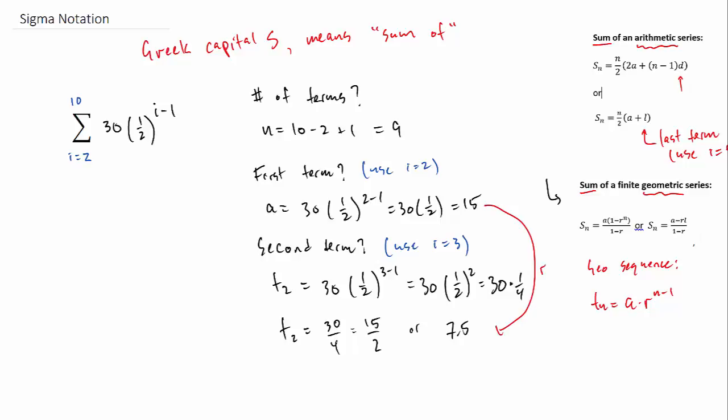So what we can tell is that we're multiplying by a half or dividing by 2 to go from our first term to our second term. So we've found our common ratio.